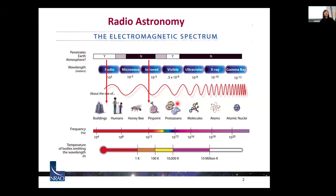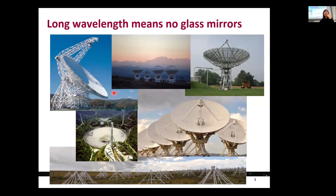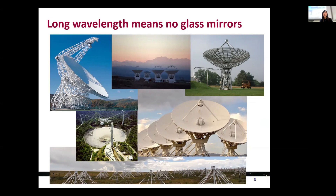As a recap, radio astronomy means that we are observing in the radio wavelength, which makes ground-based observation possible due to atmospheric transmission. One interesting thing for radio telescopes is that it is not like optical or infrared telescopes where we really need to use pristine glass mirrors. You can see from these images that it is much easier to build larger dish sizes for radio telescopes because we don't need glass mirrors. This is because when the wavelengths are millimeter, centimeter, or even meter, it becomes much easier to ensure that the dish is smooth at this scale.